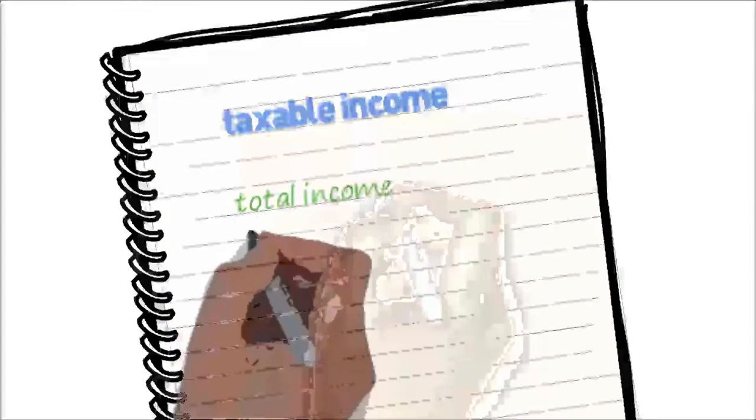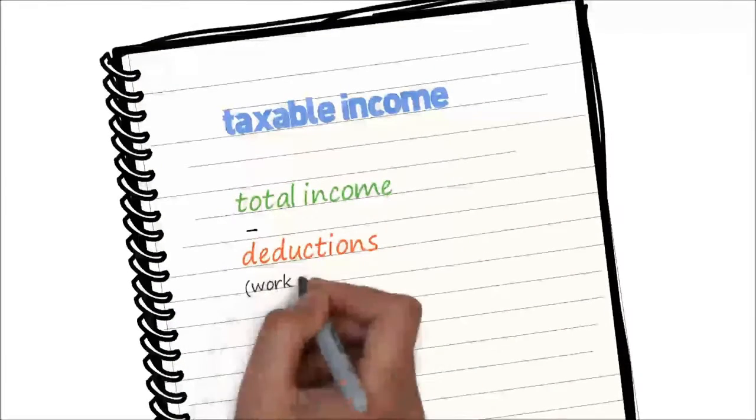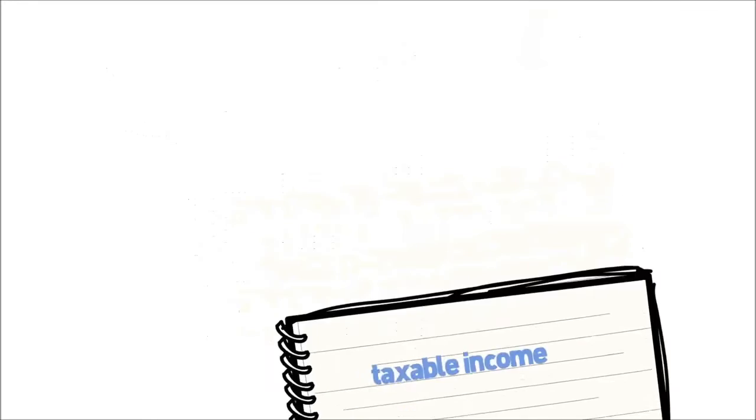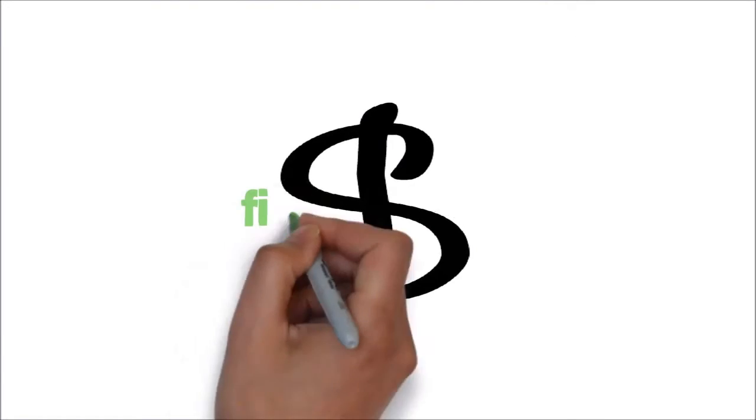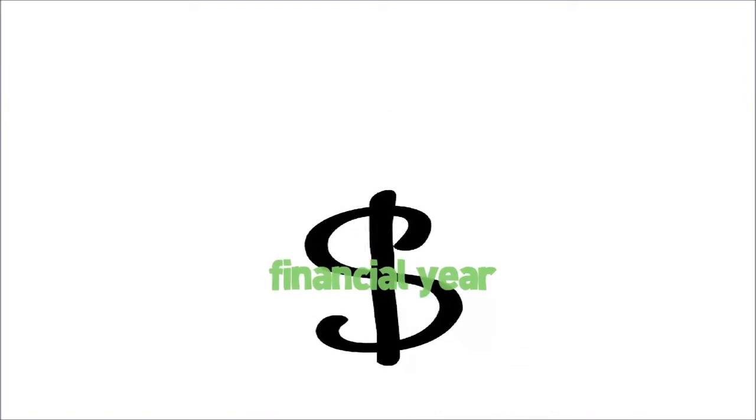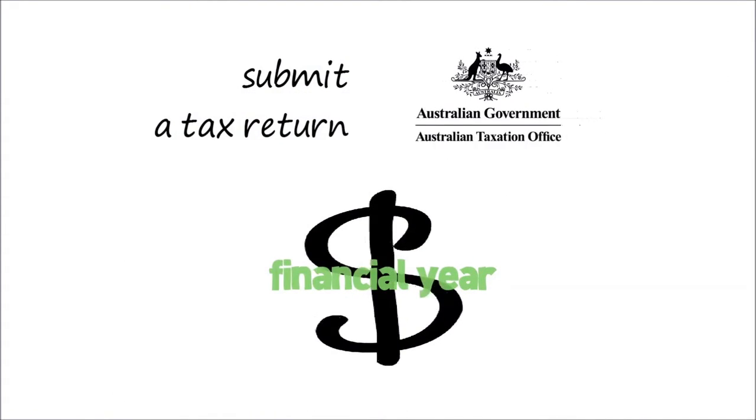Your taxable income is your total income minus deductions, which include things such as work expenses and donations to charity. If you earned income during a financial year, you are required to submit a tax return to the Australian Tax Office.